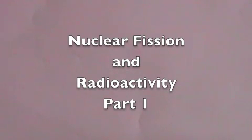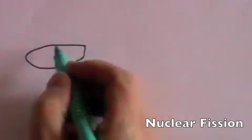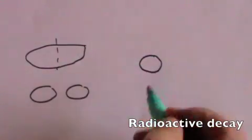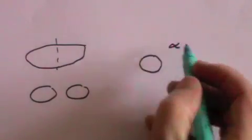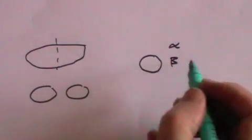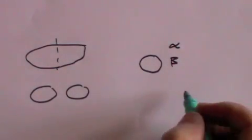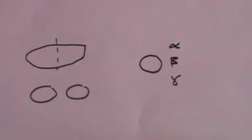Today we're going to look at nuclear fission, which is where a large nucleus splits up into smaller nuclei, and radioactivity, which is where atoms decay, either by the emission of alpha particles or beta particles or gamma rays.